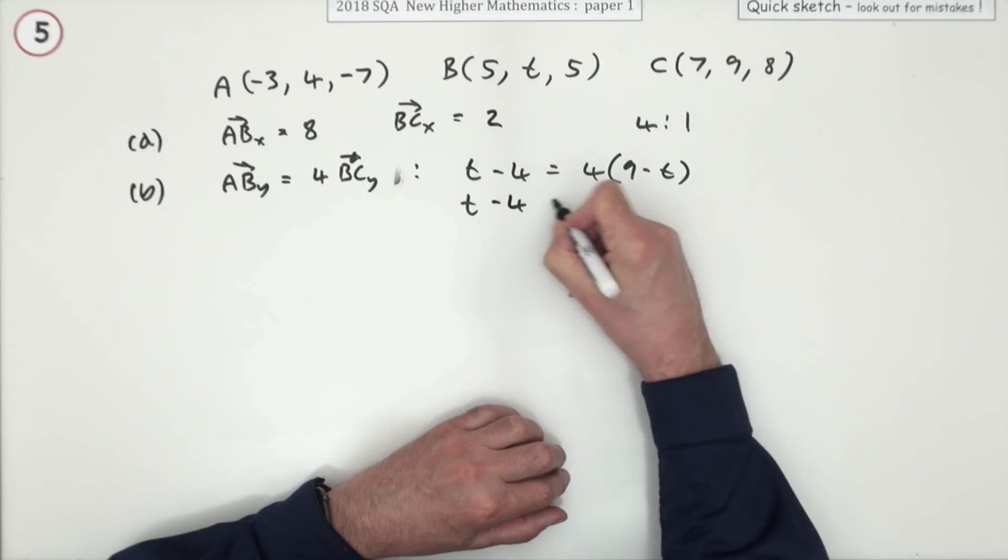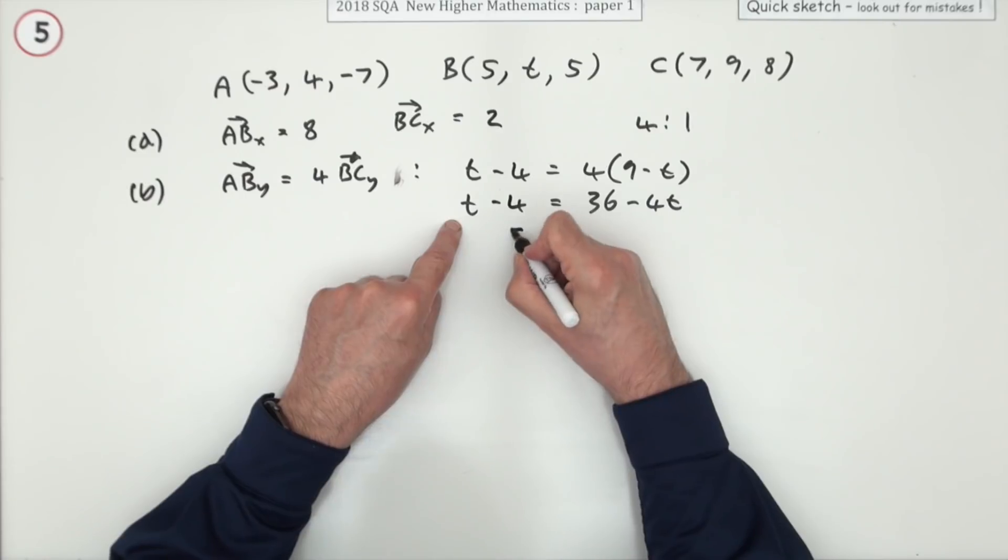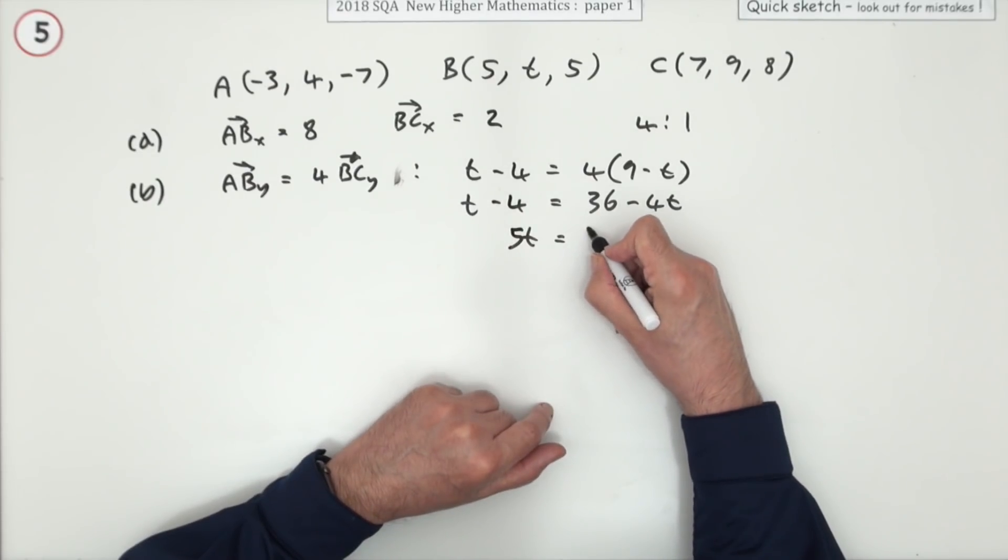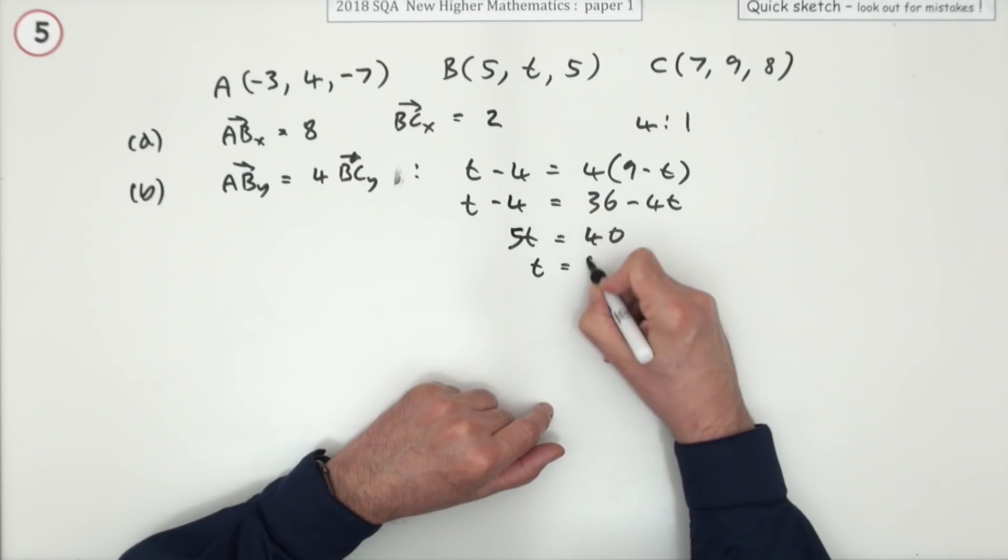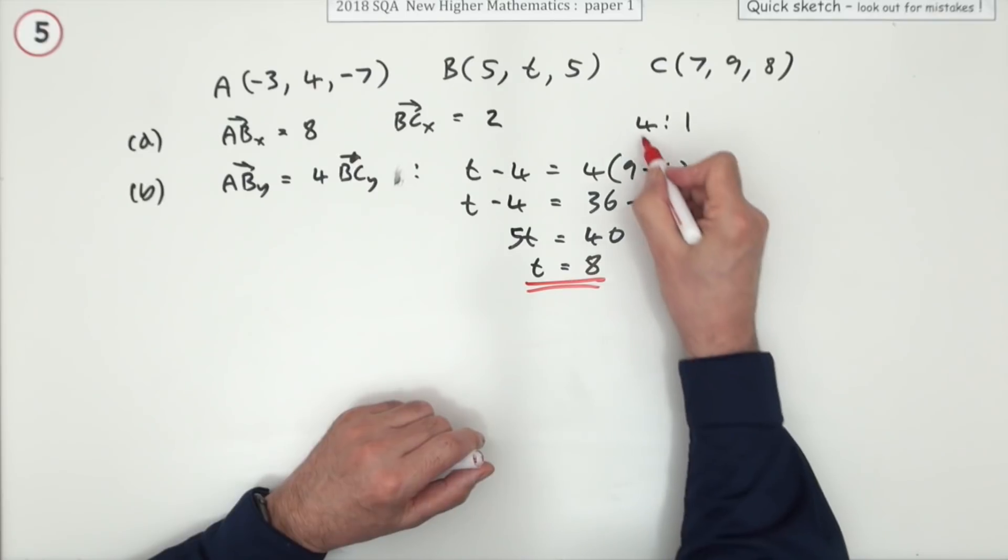So t minus four equals 36 minus 4t. Take that across, that's 5t. Take that across, add four, that makes that 40. So t should be eight. Seems to me there's quite a little bit of working just for stating the answer.